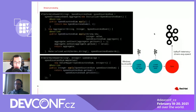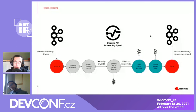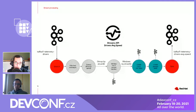Now you've got your whole pipeline written as a Java program. Stream processing systems can be very complex — if you've ever used Apache Storm, Flink, or Spark Streaming — but Kafka Streams is very straightforward. You just have a Java program, and as long as you can provide the config information and it can see the broker, you can run your stream processing pipeline.